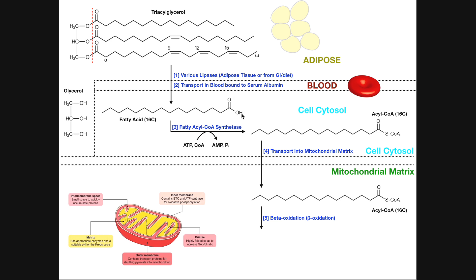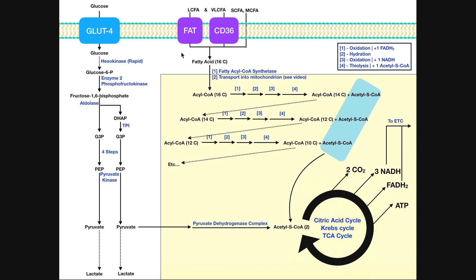In order to metabolize fatty acids, they have to be able to enter the cell. We have different kinds of fatty acids: short chain, medium chain, long chain, and very long chain. Short chain and medium chain fatty acids are small enough to diffuse through the plasma membrane by simple diffusion — they still require a carrier like albumin in the blood, but they can cross via simple diffusion. Larger fatty acids — long chain and very long chain — require protein transporters to cross the membrane. Two examples are CD36 and fatty acid transport protein, which can transport long and very long chain fatty acids into the cell.